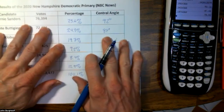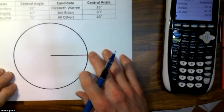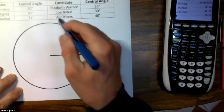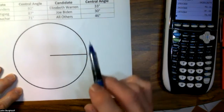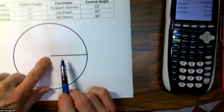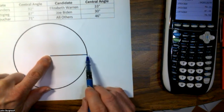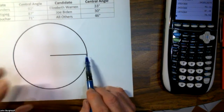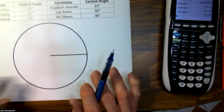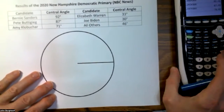This is the information that we need to create the pie chart or circle graph. If you're going to create a circle graph by hand, the best thing to do is to start with a circle, draw as carefully as you can, and also draw a line segment that reaches from the center of the circle out to the circle itself. That's going to give you a starting place to measure the angles.